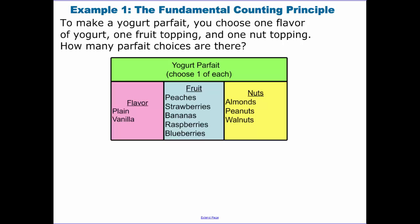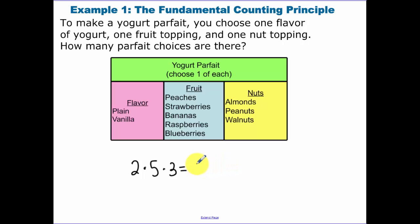To make a yogurt parfait, you choose one flavor of yogurt, one fruit topping, and one nut topping. How many choices are there? For your flavor, you have two flavors to choose from. For your fruit, there are five options. For nuts, there are three. Multiplying all those together — 2 times 5 times 3 — we have 30 types of yogurt parfait. It's just a matter of multiplying.